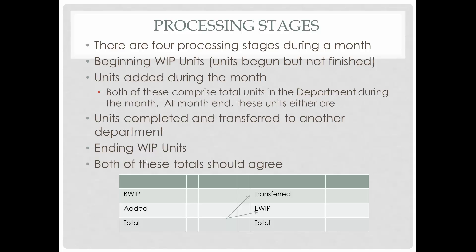There are four processing stages during a month: beginning work in process units, units begun but not finished, and units added during the month — both of these comprise total units in the department during the month. At month end, these units either are completed and transferred to another department, or they remain in the initial department as ending work in process. Both of these totals should agree.